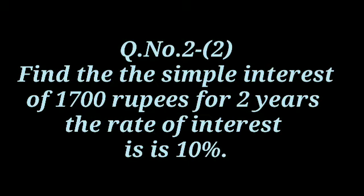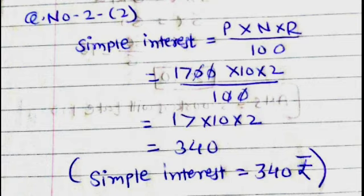Question number 2.2. To find the simple interest of 1,700 rupees for 2 years, the rate of interest is 10%. Formula of simple interest equals p into n into r divided by 100. Principal is 1,700, rate of interest is 10, and time years are 2. 17 into 10 into 2 divided by 100. Answer is 340. Simple interest is 340 rupees.